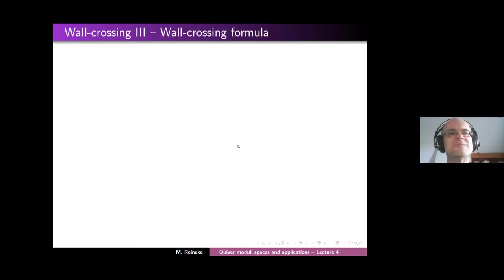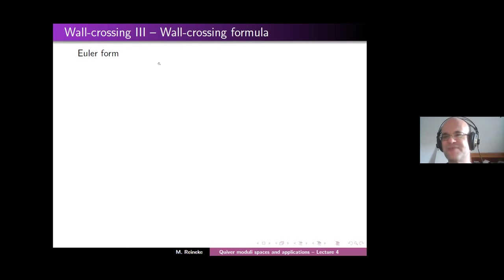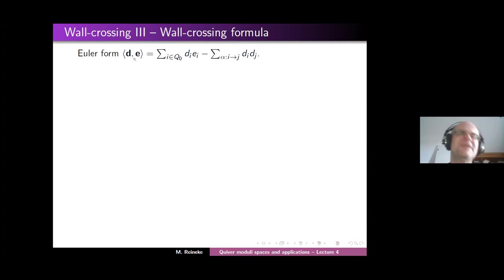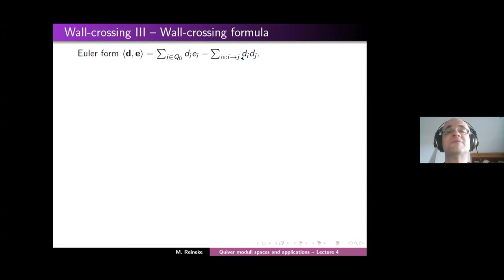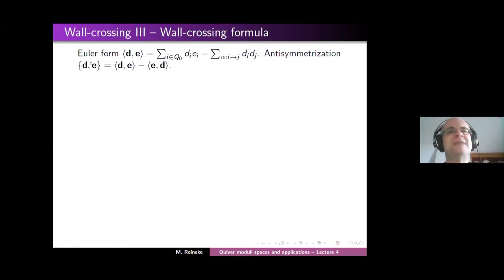Let's reformulate this as the wall-crossing formula. I need a bit of notation. The Euler form of a quiver representation is a non-symmetric bilinear form on dimension vectors defined by: χ(d,e) = sum over all i of d_i e_i minus the sum over all arrows of d_i d_j. It's the homological Euler form. What we need is not itself but its anti-symmetrization: χ(d,e) minus χ(e,d).